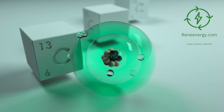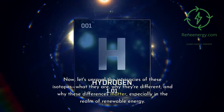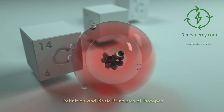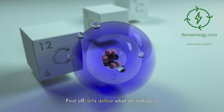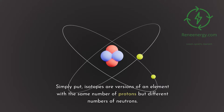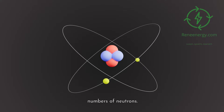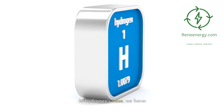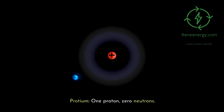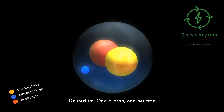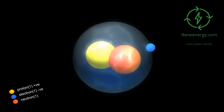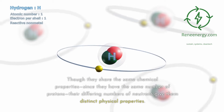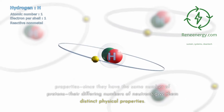The Intricacies of Isotopes. Let's unravel the intricacies of these isotopes — what they are, why they're different, and why these differences matter, especially in the realm of renewable energy. Simply put, isotopes are versions of an element with the same number of protons but different numbers of neutrons. They're like siblings in a family — each shares the same last name but has their own unique traits. In hydrogen's case: Protium has one proton and zero neutrons. Deuterium has one proton and one neutron. Tritium has one proton and two neutrons.